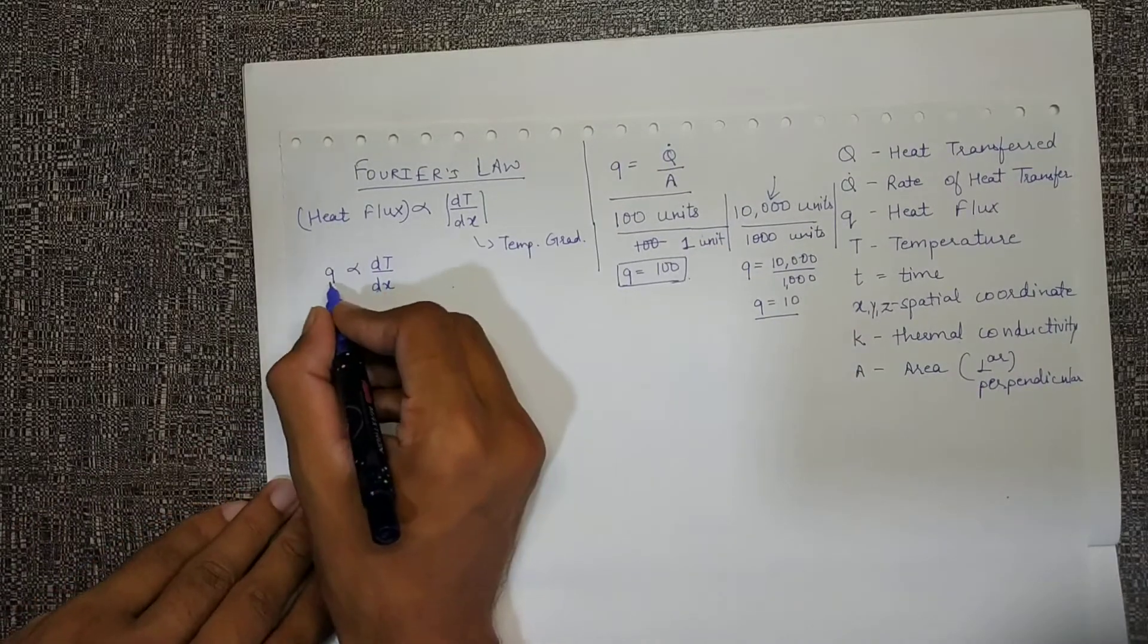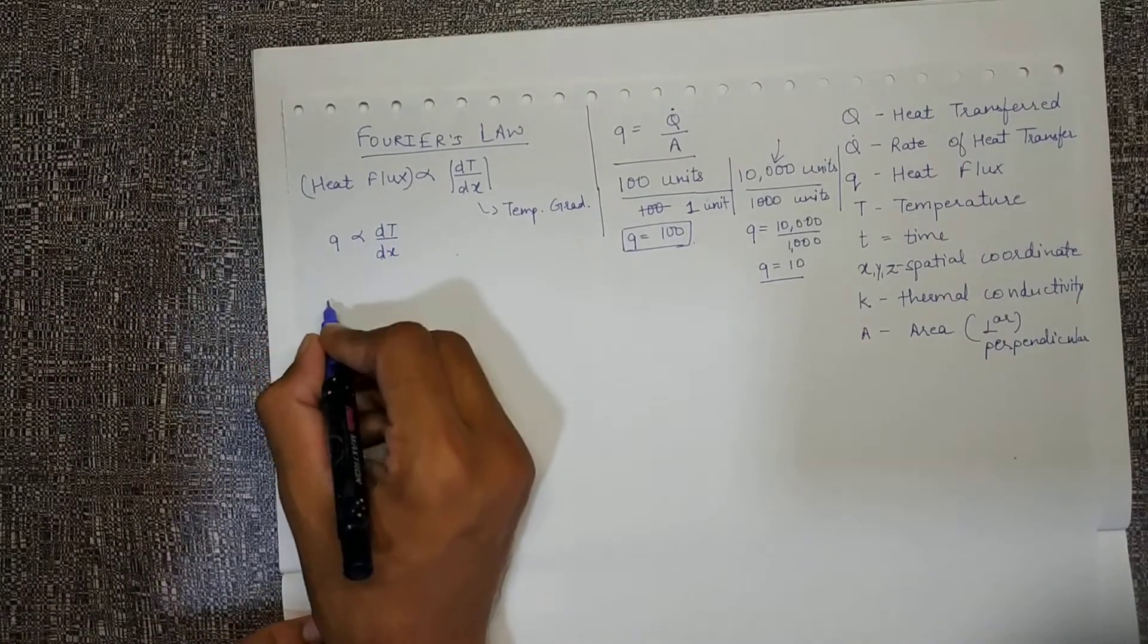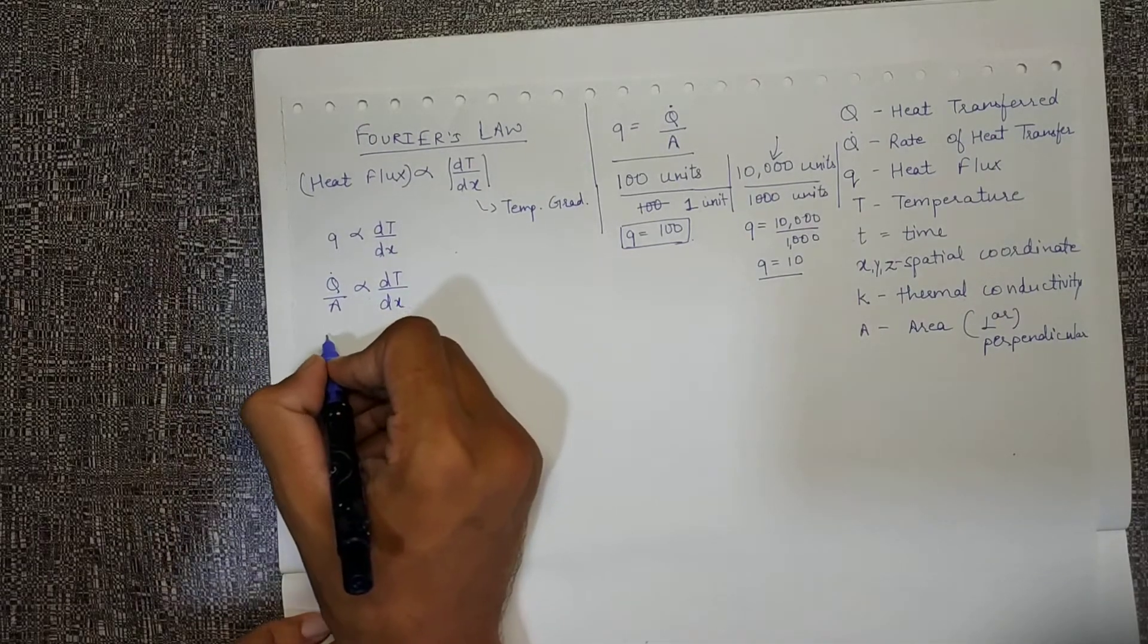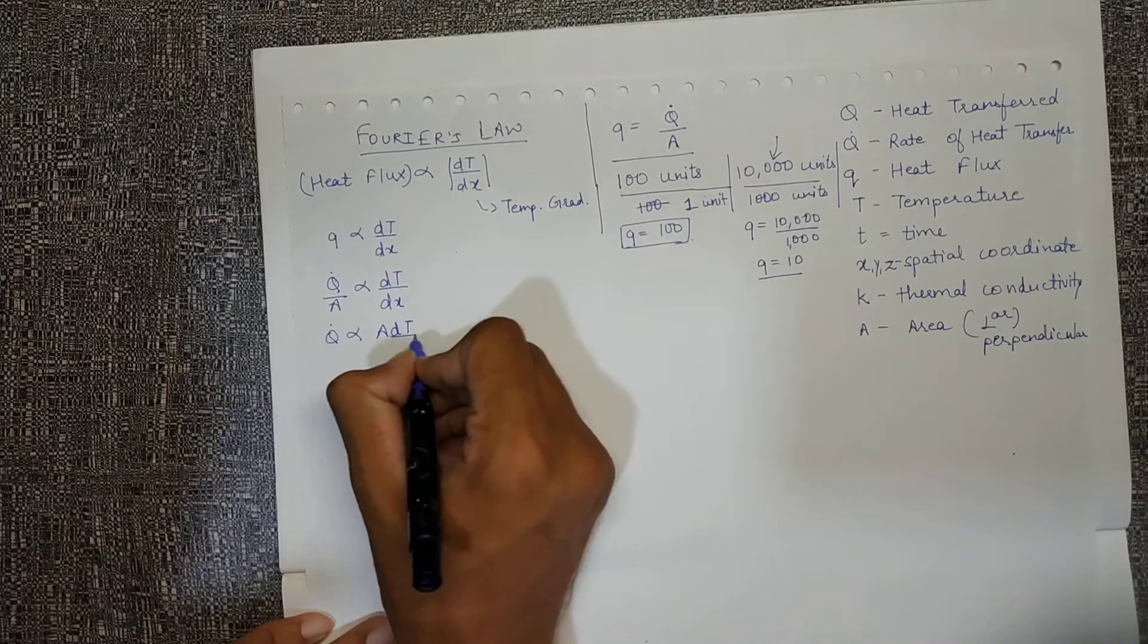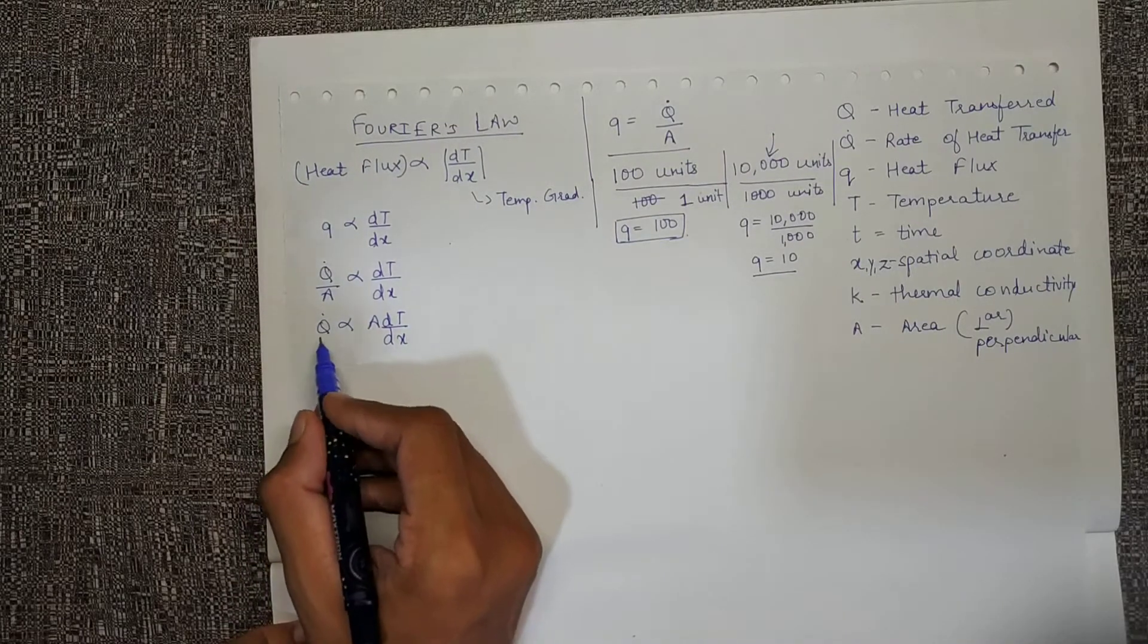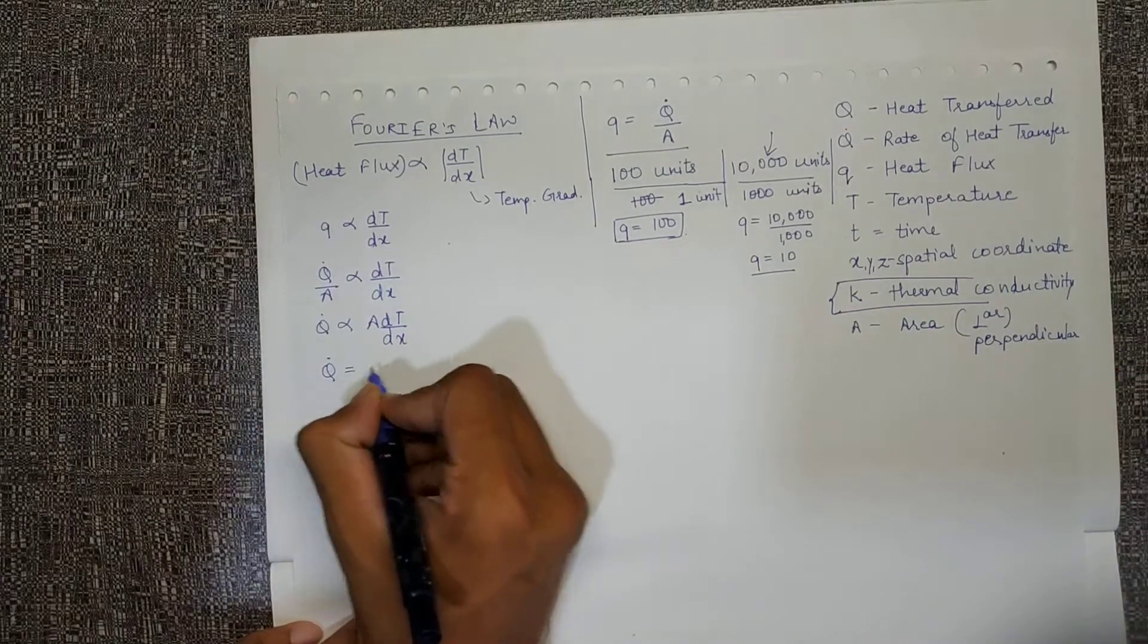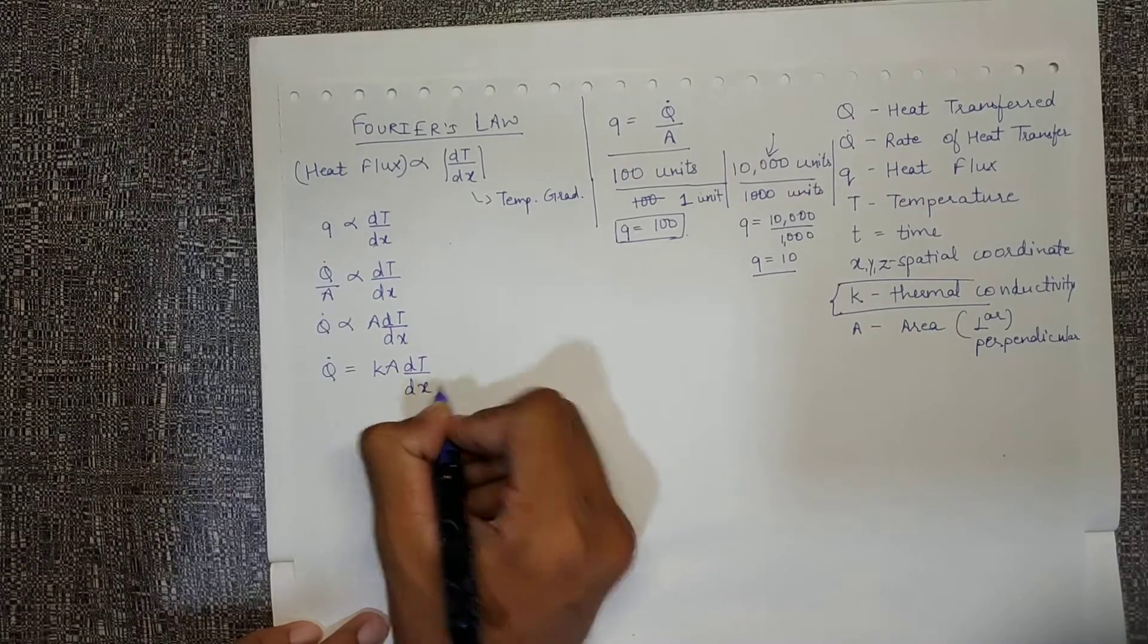So let's come back. We had small q which is directly proportional to dt by dx. Hence we will have q dot upon area proportional to dt by dx. Hence q dot will be proportional to A times dt by dx. Now to remove the proportionality we will need a proportionality constant. So this k is the proportionality constant for us. So this is the formula.